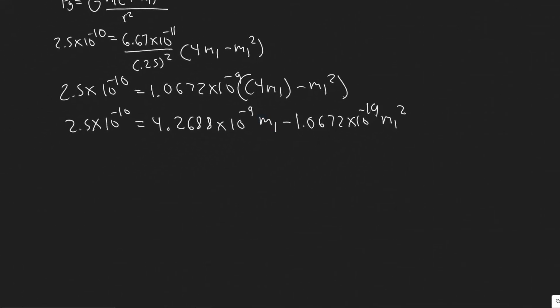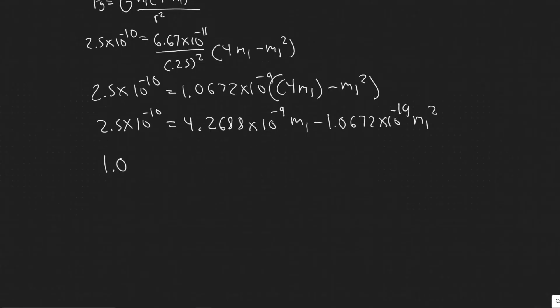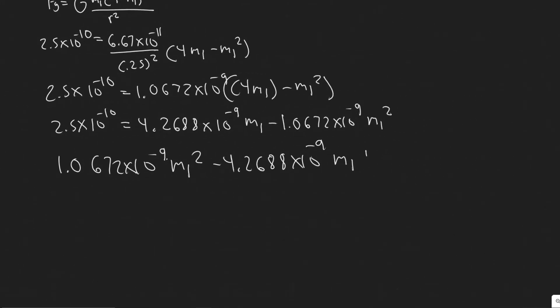So 1.0672 times 10 to the minus 9 m1 squared. And then to get it into quadratic form, which is what we needed, I'm going to move this value to the other side. So 1.0672 times 10 to the minus 9 m1 squared minus 4.2688 times 10 to the minus 9 m1 and then plus 2.5 times 10 to the minus 10. And there we go.